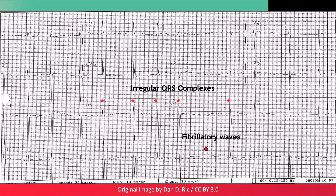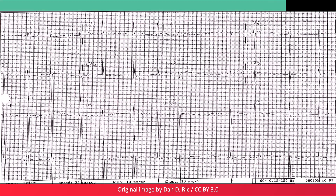In this ECG, the fibrillatory waves are not as easy to appreciate. The irregularity of the RR intervals, however, is more clearly evident. The rhythm irregularity in combination with the lack of P waves helps identify this dysrhythmia as atrial fibrillation.